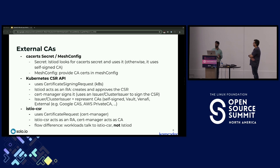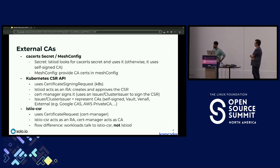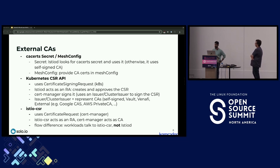We might start off with a self-signed cert from Istiod initially, but longer term we'd want an external CA that we own, control, and that integrates with other areas of our environment. Istiod uses base CA data pushed to config maps in Kubernetes — either a CA secret or a CA cert secret. When Istiod starts, it looks for a CA cert secret and pushes that information to config maps.